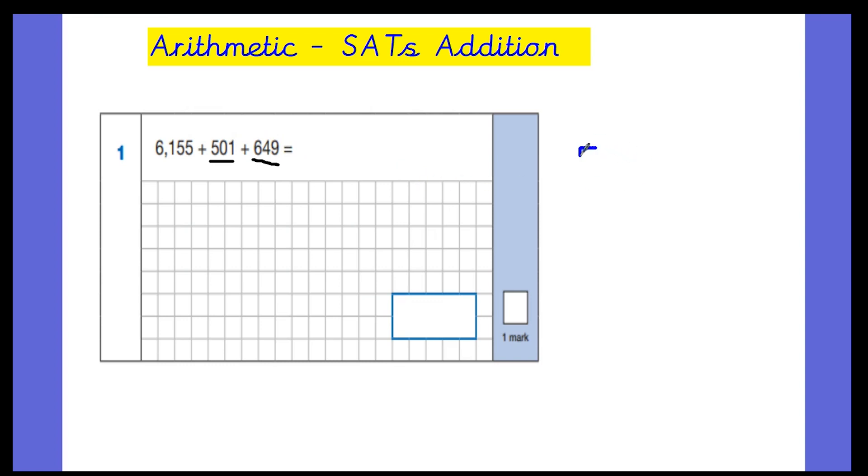So I'm going to do 500 add 650, which makes 0 and 0 make 0, 0 and 5 makes 5, and 5 and 6 makes 11. So we have 1,150.